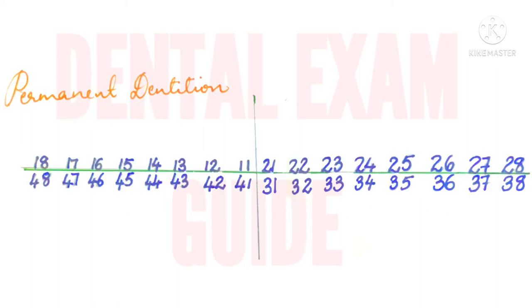This is the two-digit numbering system for permanent dentition. The first quadrant is denoted by the number 1, the second quadrant by 2, the third quadrant by 3, and the fourth quadrant by 4, unlike primary dentition where 5, 6, 7, and 8 are used to denote the quadrants.